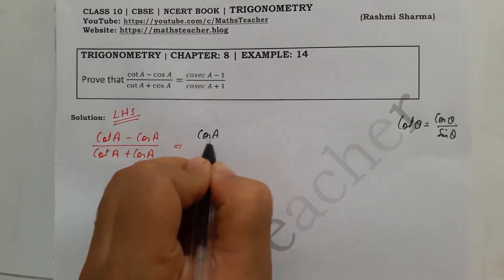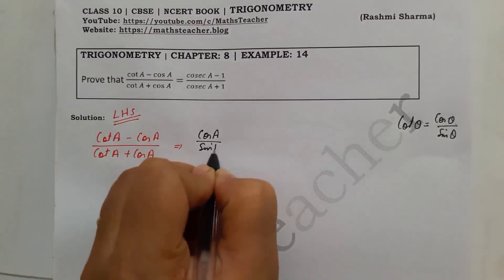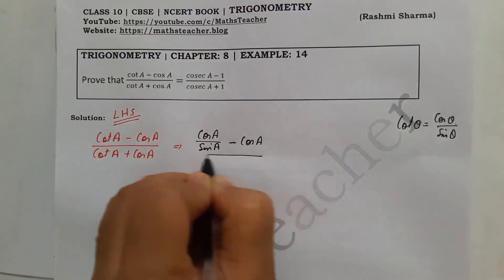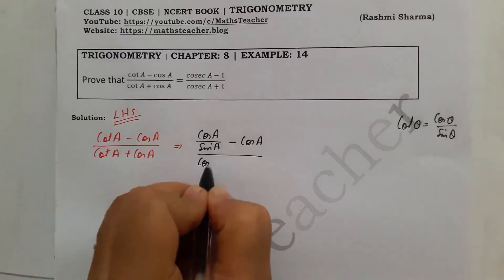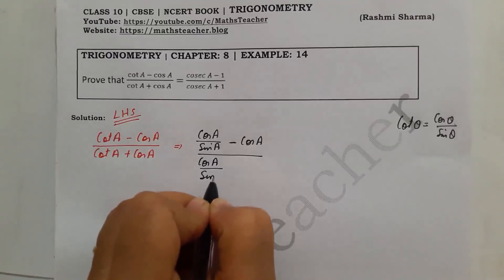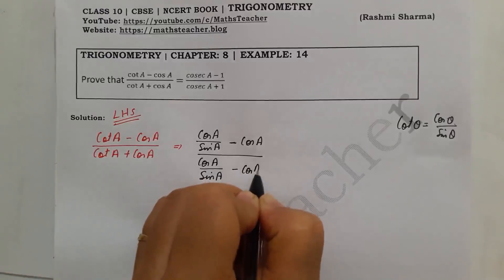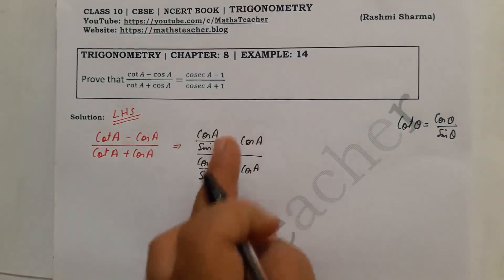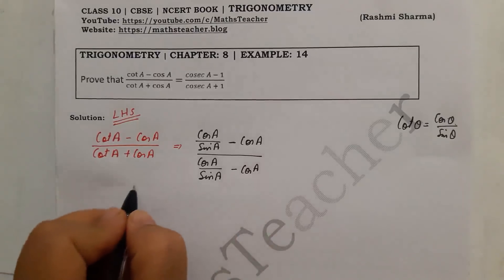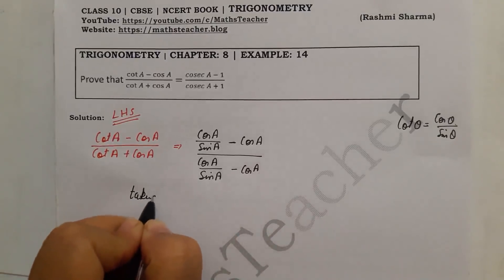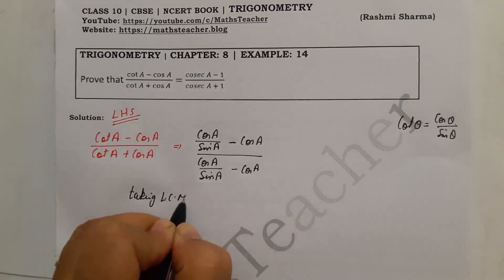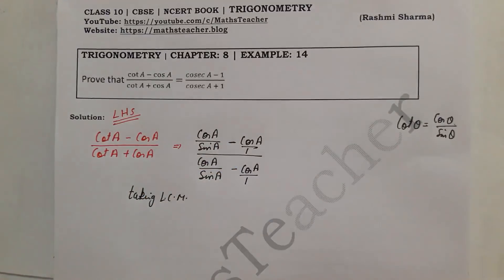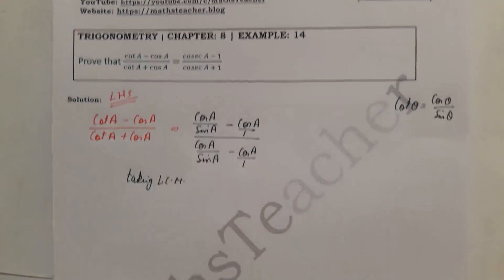So we put cos A divided by sin A minus cos A in the numerator, and in the denominator cos A divided by sin A plus cos A. Then we take the LCM and solve the numerator and denominator. Taking LCM here gives us cos A divided by sin A, and the LCM is sin A.